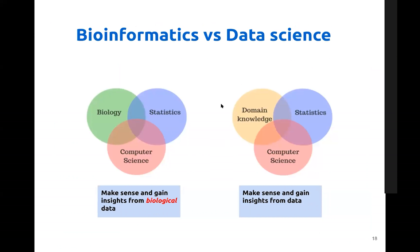Let's compare bioinformatics versus data science. They're both similar. The difference is the domain knowledge — in bioinformatics, the domain knowledge is biology, whereas in data science, the domain knowledge could be anything else: finance, business, economics, or other areas.